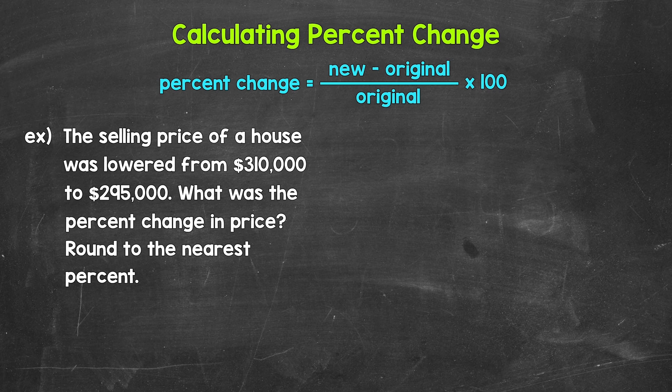We then divide that result by the original value. Always divide by the original value because we are finding the percent change from that original value. That's going to give us a decimal. We then multiply the decimal by 100 to convert it to a percent.